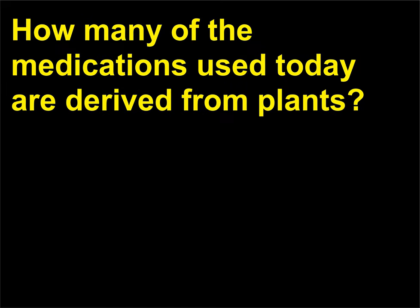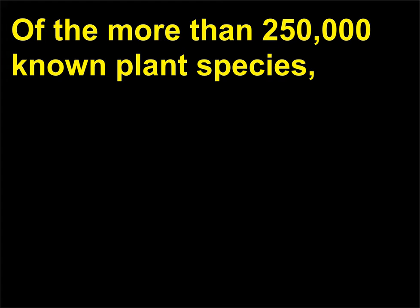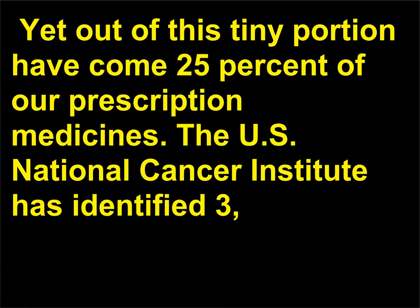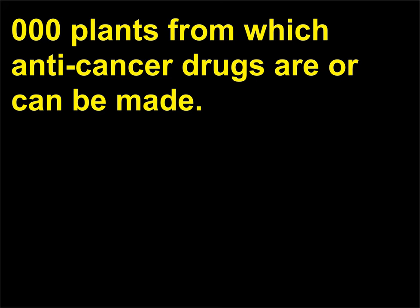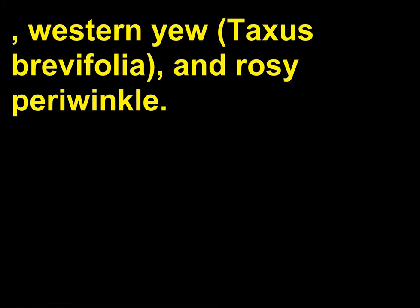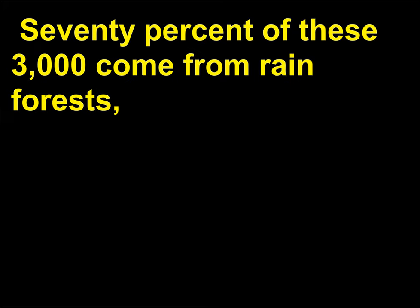How many of the medications used today are derived from plants? Of the more than 250,000 known plant species, less than 1% have been thoroughly tested for medical applications, yet out of this tiny portion have come 25% of our prescription medicines. The U.S. National Cancer Institute has identified 3,000 plants from which anti-cancer drugs are or can be made. This includes ginseng (Panax quinquefolius), Asian mayapple (Podophyllum hexandrum), western yew (Taxus brevifolia), and rosy periwinkle. 70% of these 3,000 come from rainforests, which also are a source of countless other drugs for diseases and infections.